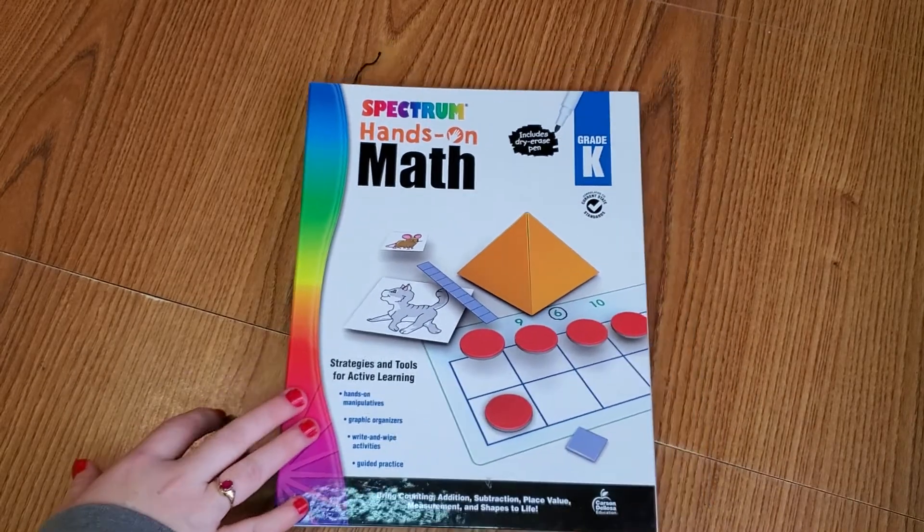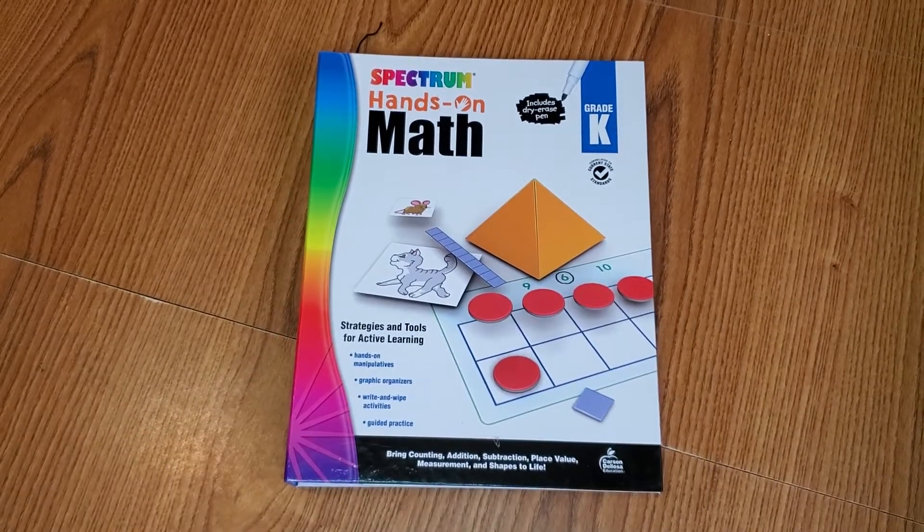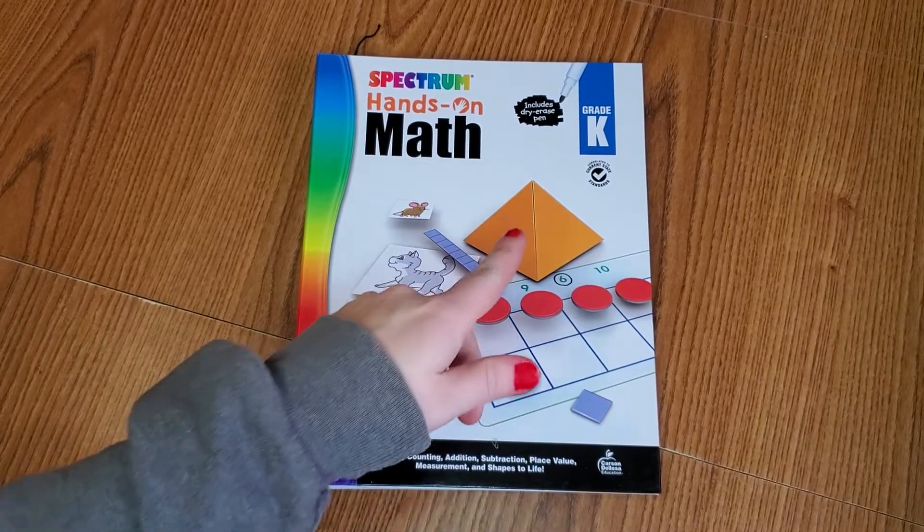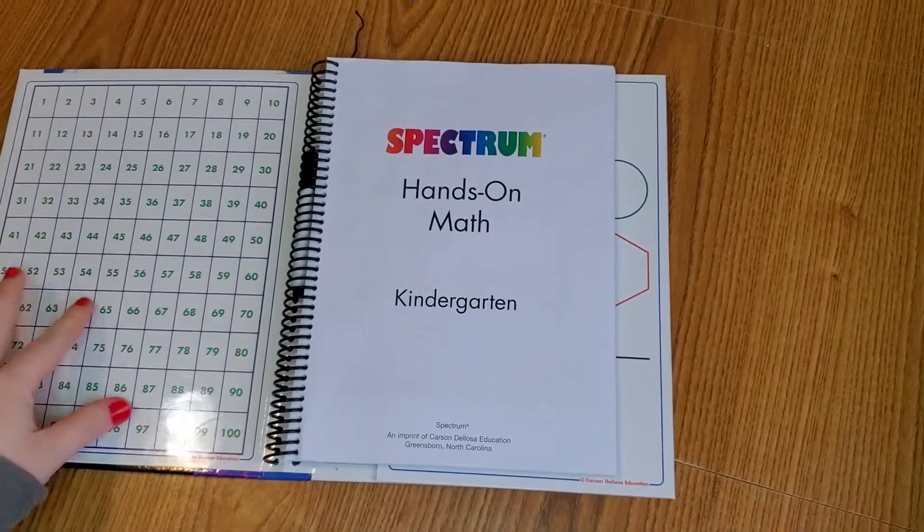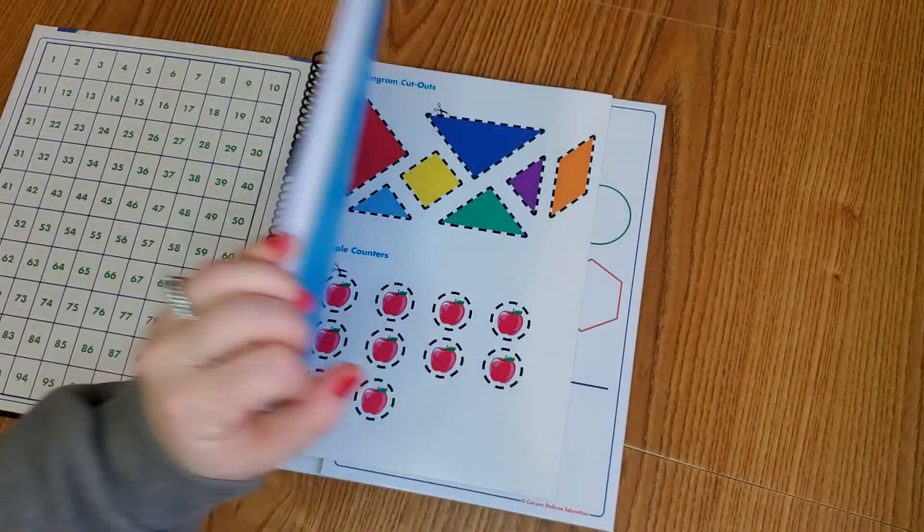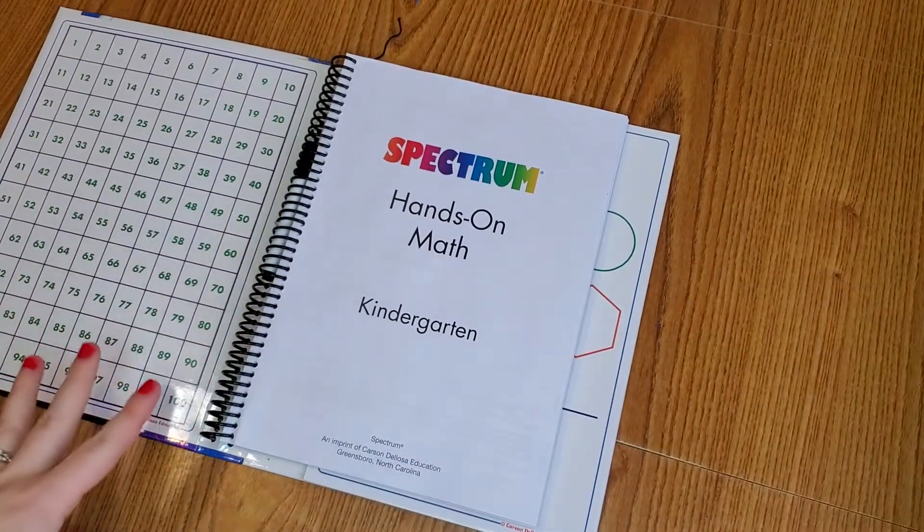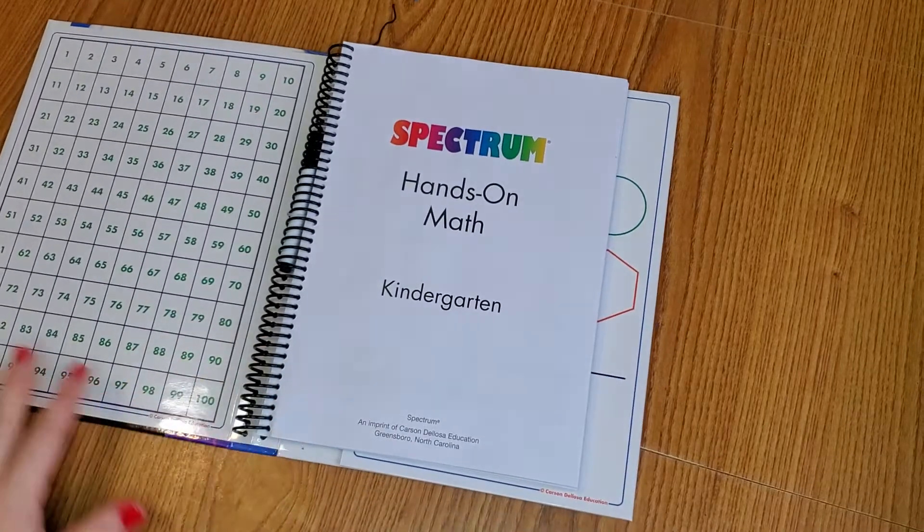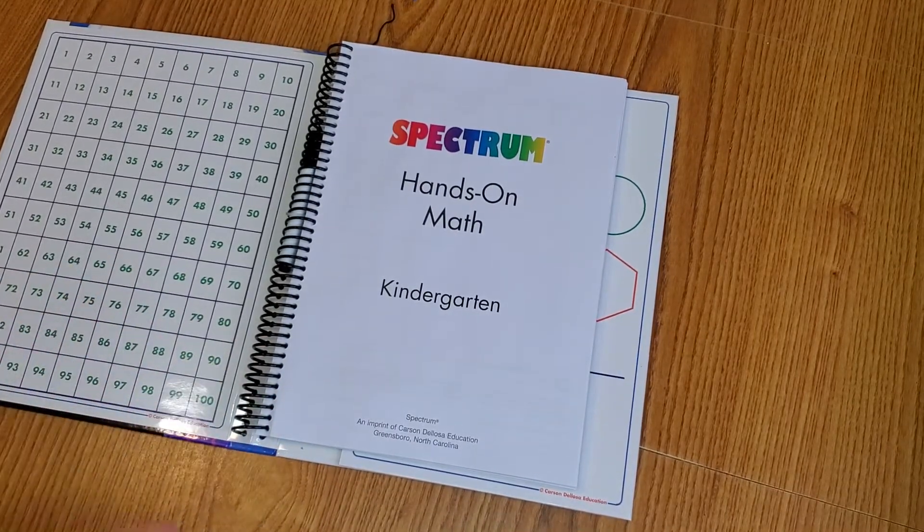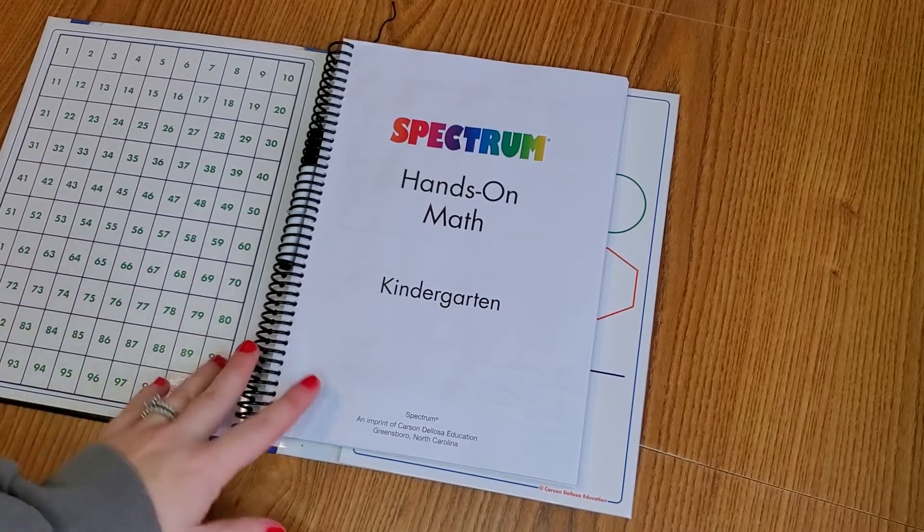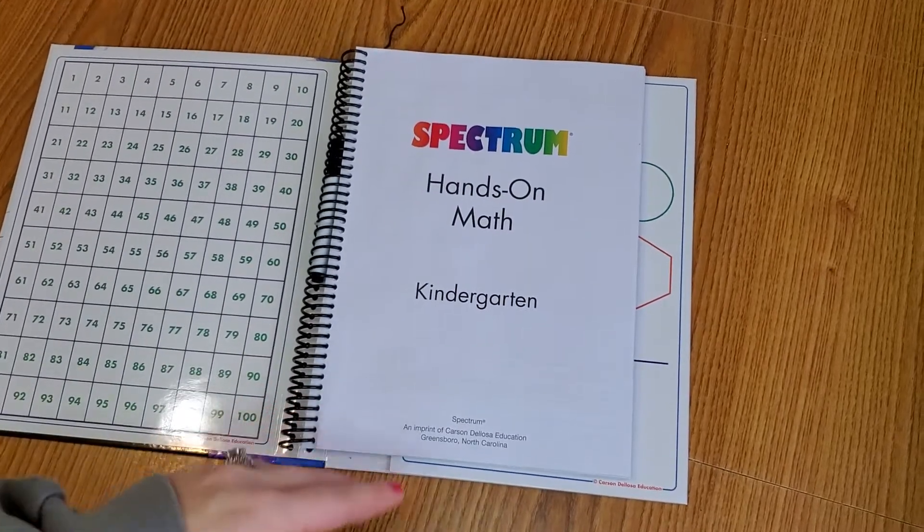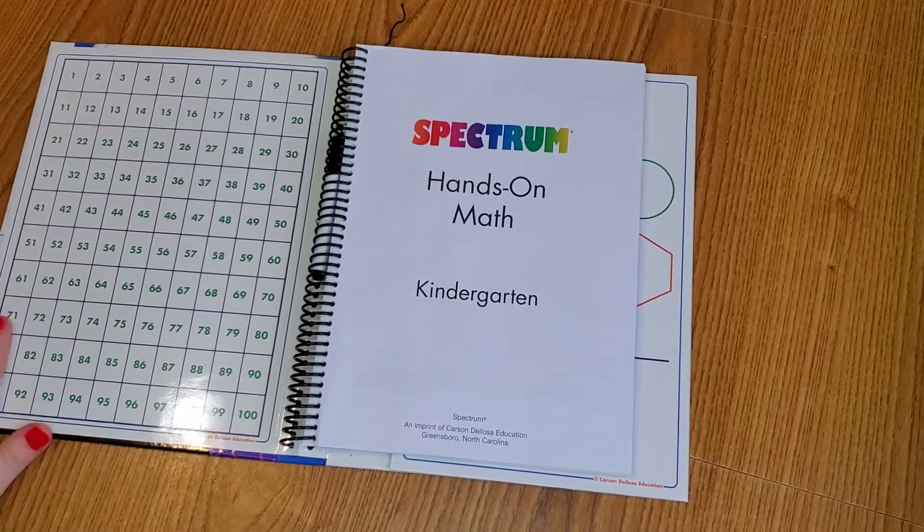There's lots of different manipulatives in here and there's also a dry erase pen to do some of the activities in the book. This is just a really quick review, a little flip through, because I know sometimes it's really hard to see inside the books before you purchase them online. I'll have a link in the description down below of where you can purchase it. I believe it was $14.99 on Amazon.